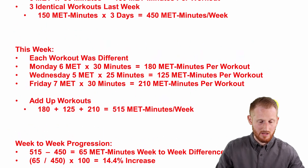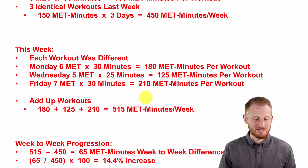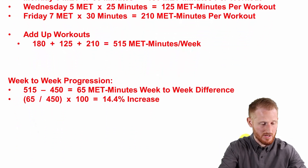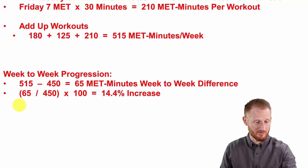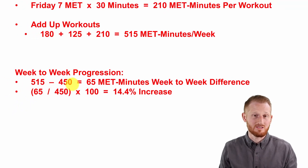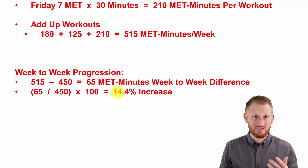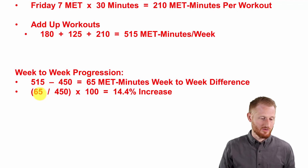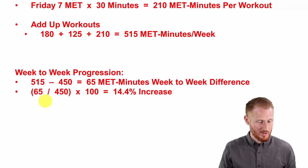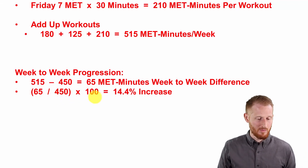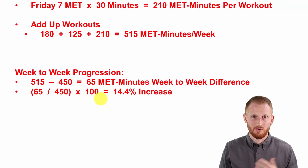Looking at the week-to-week progression: last week she did 450 MET-minutes, this week 515 MET-minutes. Subtracting the two gives a difference of 65 MET-minutes. To get this into percentage format: 65 divided by 450 — last week's MET-minutes — multiplied by 100 gives an increase of 14.4%.